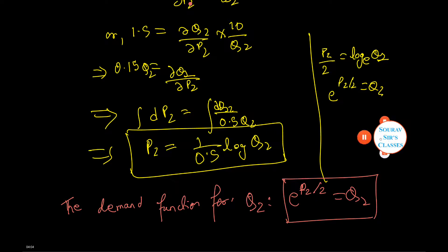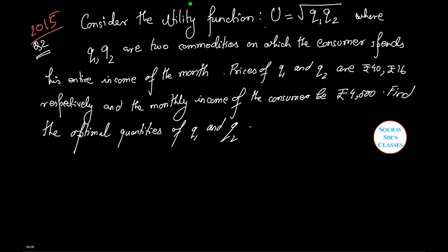Next we are given a utility function U equals root over Q1 Q2, where Q1 and Q2 are commodities on which the consumer spends his entire income. The prices of Q1 and Q2 are rupees 14 and 16, and the monthly income of the consumer is rupees 4000.